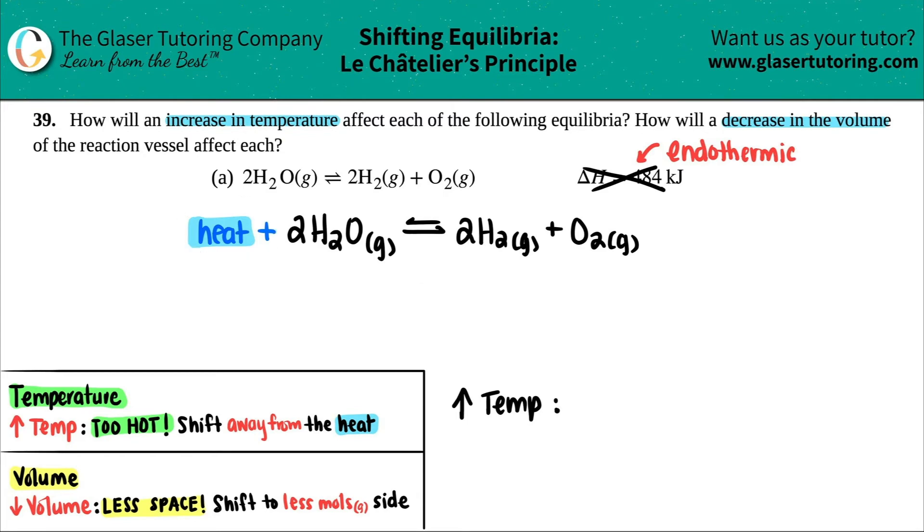So in this case, since the heat is on the reactant side, I'm going away. So my shift is going to be this way. I'm going to shift to the right. I'm just going to say shift right. And there you go. That's the answer to one of the questions.